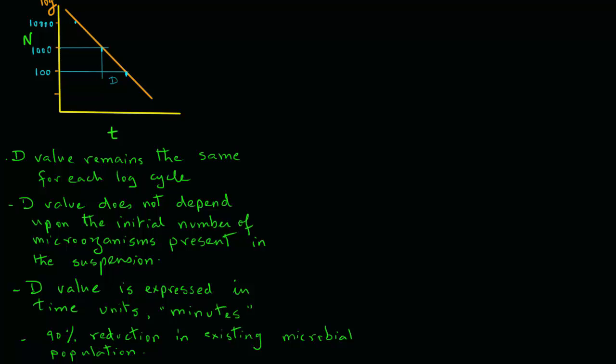We will also observe in later tutorials that the D value for microorganisms and for nutrients present in the food vary considerably. In fact, the D values for nutrients can be one hundred to thousand times the D value for microorganisms.